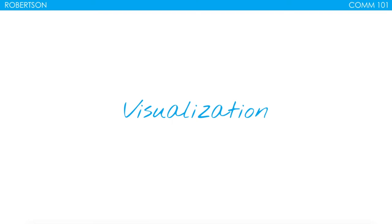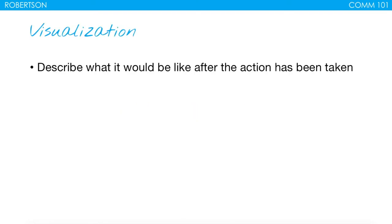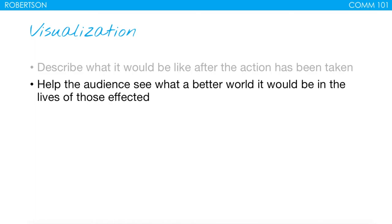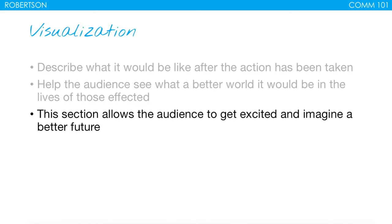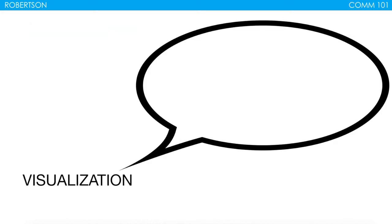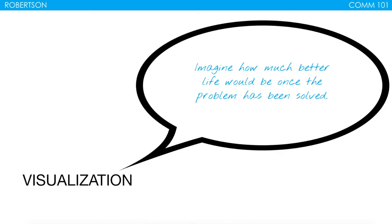After we've discussed the problem and shown a way to solve it, our next step is the visualization step. Here you're trying to describe what it would be like after the action has been taken — after the plan, what does the world look like? This helps the audience see what a better world it would be in the lives of those affected. You're trying to get people to see the promised land. For example, if you're talking about getting someone to exercise more, you're trying to get them to feel how much more energy they'd have after doing this for a month. This section allows the audience to get excited and imagine a better future.